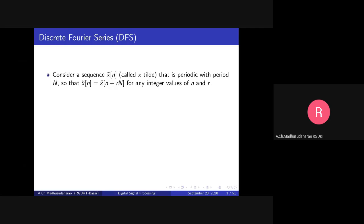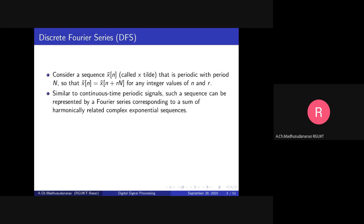Consider a sequence x̃(n) that is periodic with period N, so that x̃(n) equals x̃(n + rN) for any integer r. That means we will consider some periodic sequence x̃(n) with period capital N.